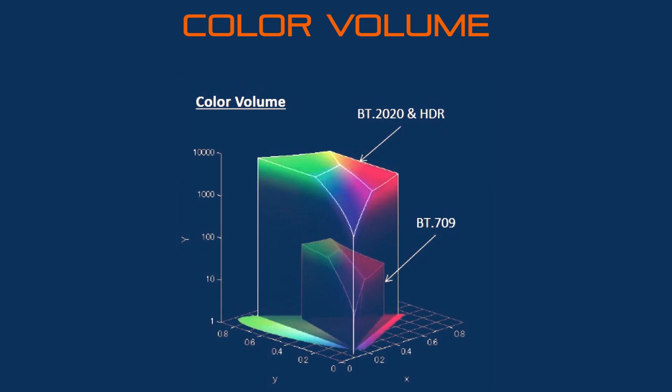On this diagram we can see that the release of HDR, with the passage from 8 bits to 10 bits, allows us to display content with a much larger color volume and luminance than what we had with Full HD content.